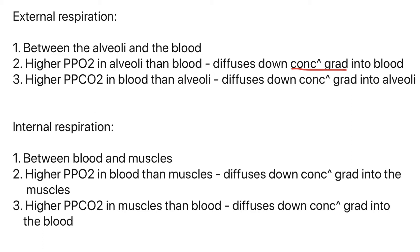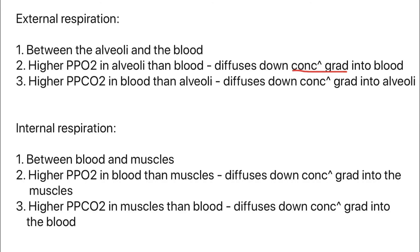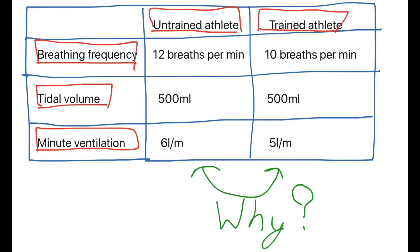Internal respiration occurs between the blood and the muscles — it's called internal because it's inside the body, not in contact with the outside. There's a higher partial pressure of oxygen in the blood than the muscles, because the muscles are aerobically respiring and using that oxygen, so it diffuses down the concentration gradient from the blood into the muscles for aerobic respiration. During aerobic respiration, carbon dioxide is produced, so there's a higher partial pressure of CO2 in the muscles, which then diffuses down the concentration gradient into the blood.